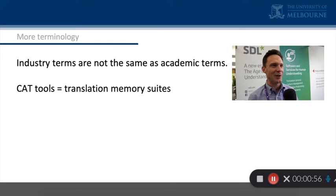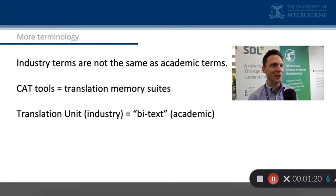As you've seen, they talk about CAT tools — computer assisted or aided translation. I like to talk about translation memory suites. A suite is just a sequence of tools. The main one is the translation memory, and then you get these other tools packaged with it in the software. A philosophical difference perhaps, not an important one.